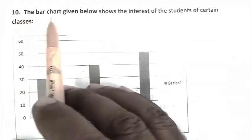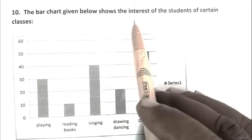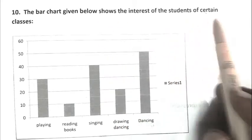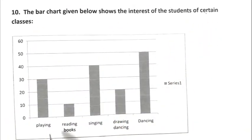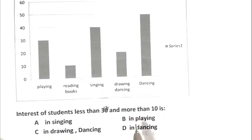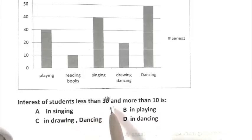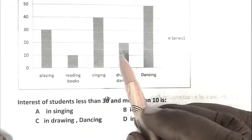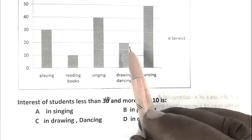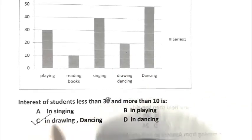Question number 10: The bar chart given below shows the interest of students in certain classes. Interest of students less than 30 and more than 10 is. If we closely watch the table, more than 10 and less than 30 is drawing and dancing. C is the right answer.